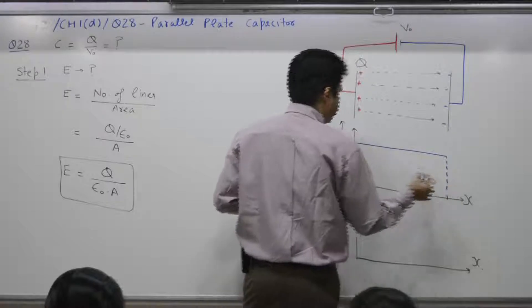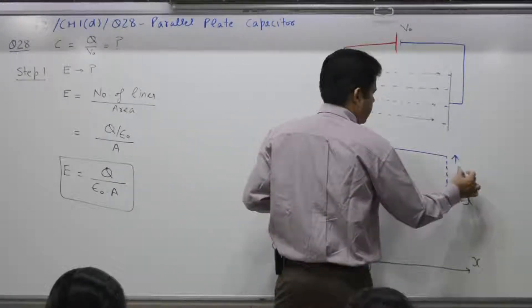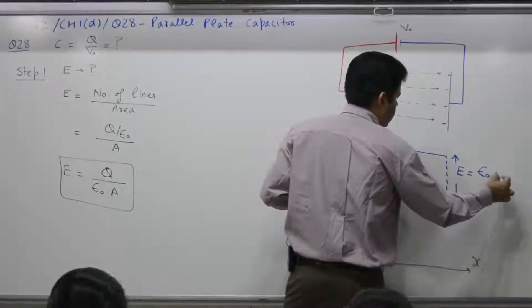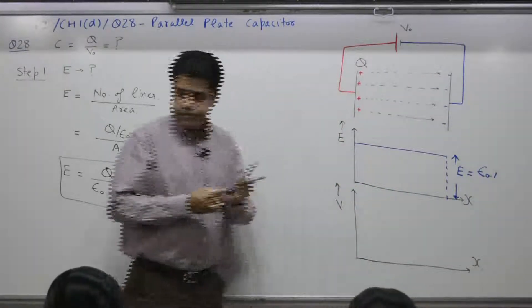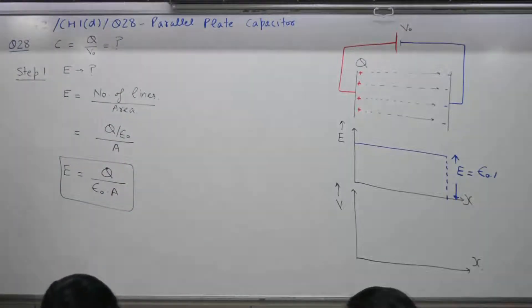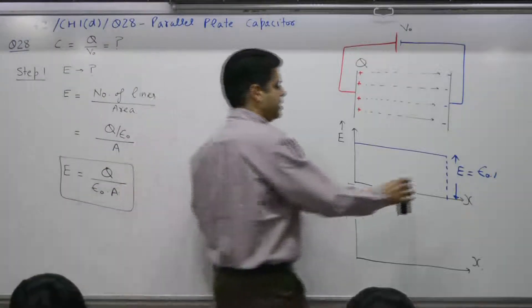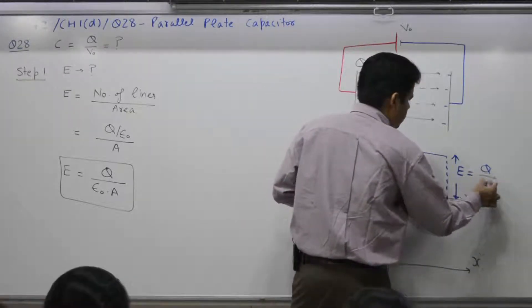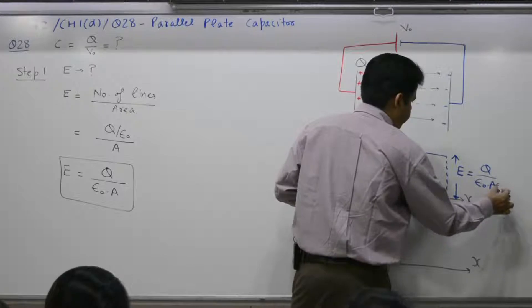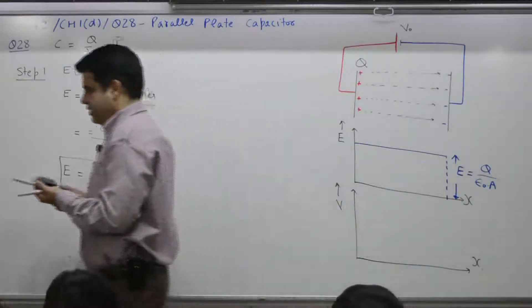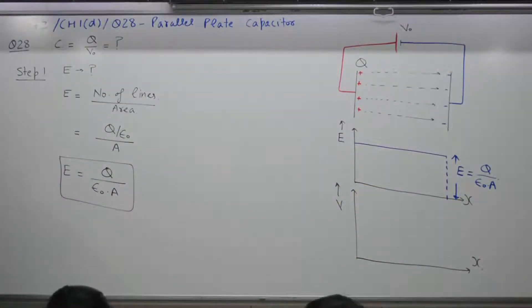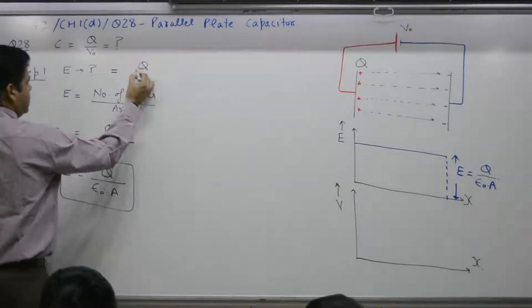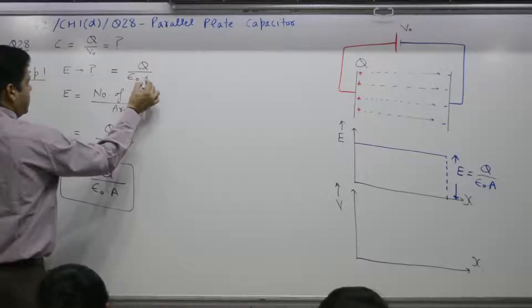The electric field E is equal to Q by epsilon naught A. Step one result: E is equal to Q divided by epsilon naught A.